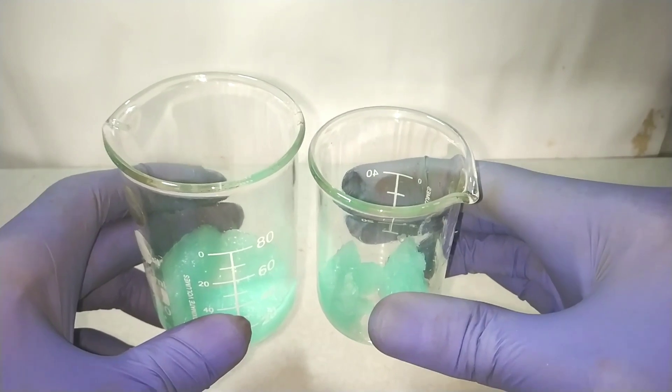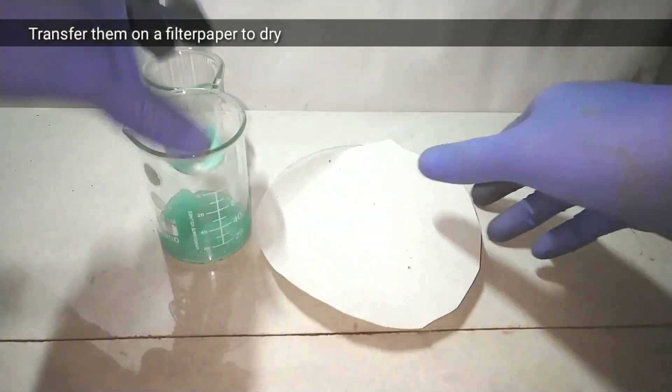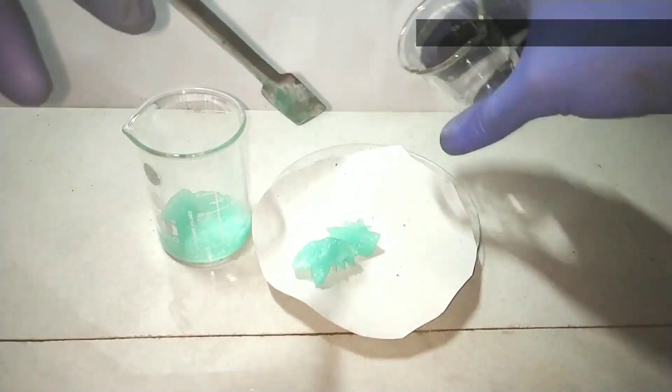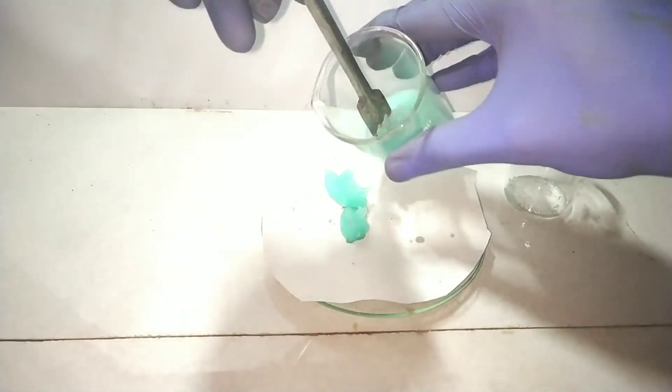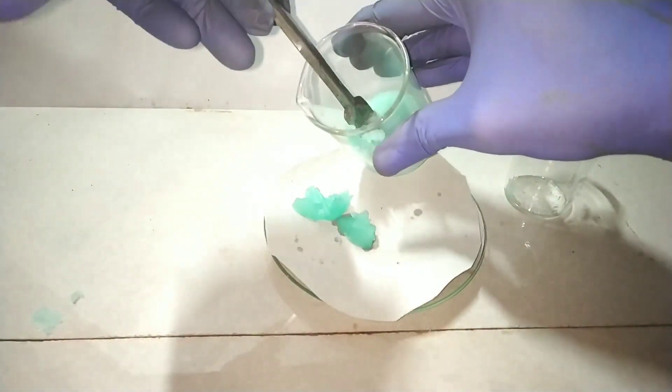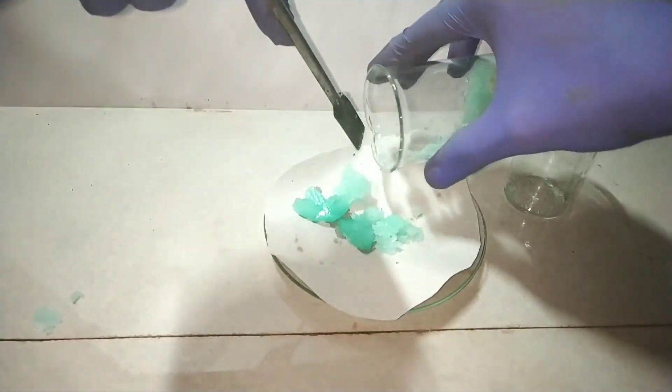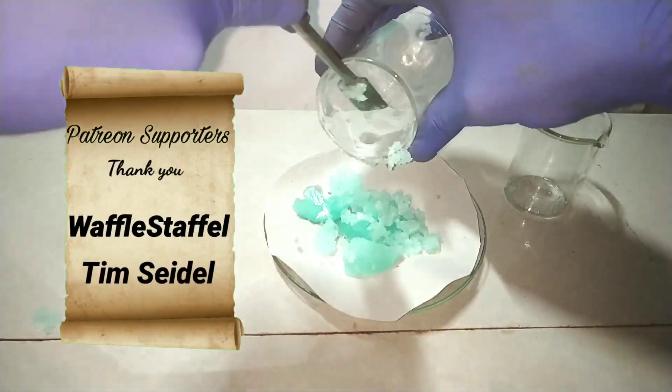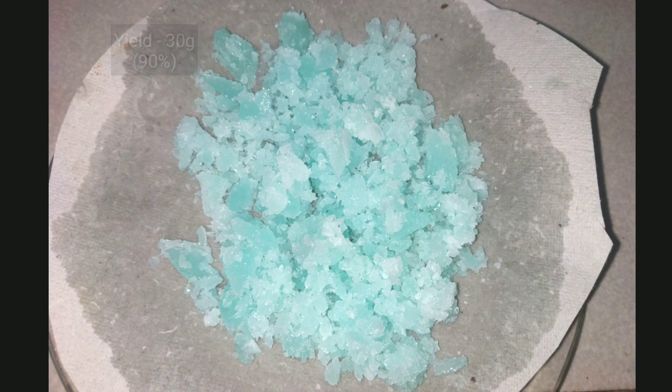Now I will be transferring the ferrous sulfate into a piece of tissue paper or filter paper to dry them, and then we will be weighing them to use in preparing our Mohr salt. I got a yield of about 30 grams.